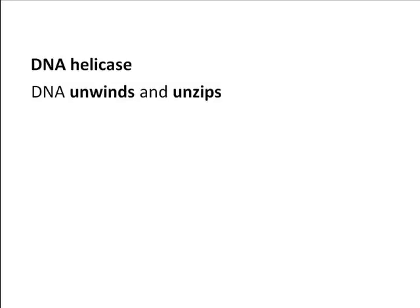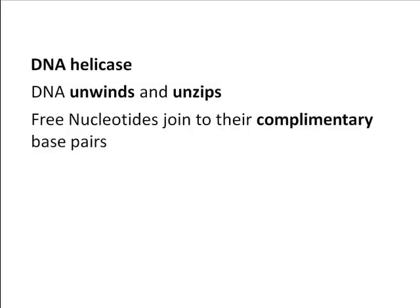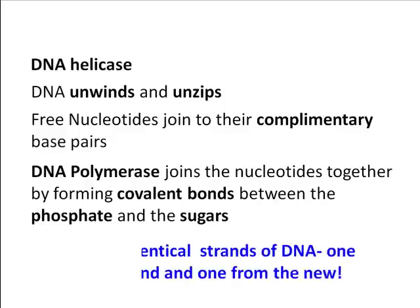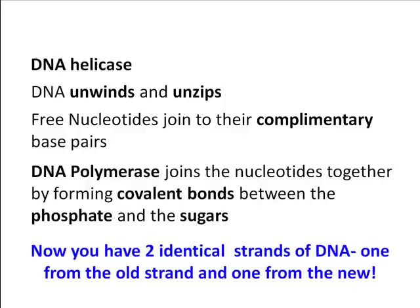This is where the free nucleotides come in. Free nucleotides in the nucleus pair up with their complementary bases that are exposed. Then another enzyme, called DNA polymerase, links the free nucleotides to the strand by forming covalent bonds between the phosphates and the sugars. So now you have two identical strands of DNA made up of one old strand and one new one.